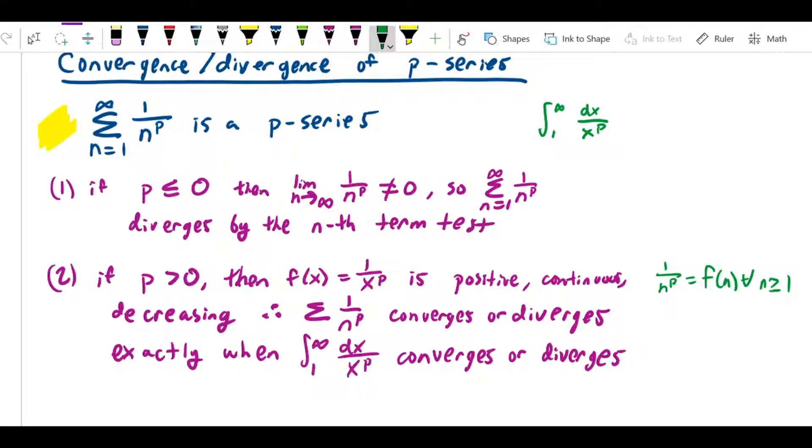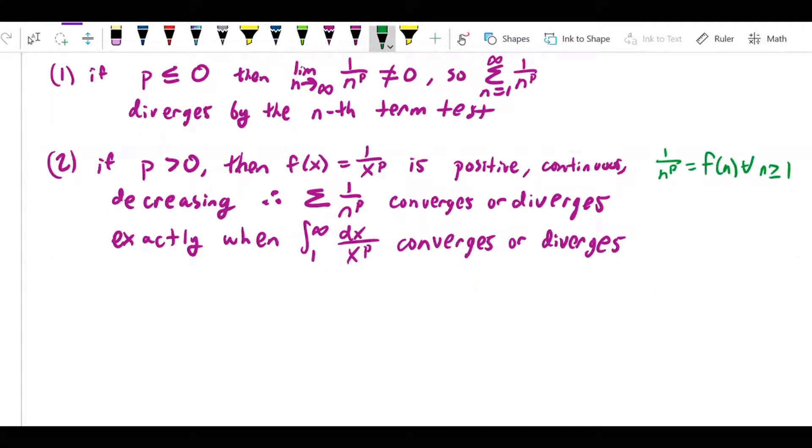I think it's fairly obvious that, just looking at 1 over x to the p, that as long as x is a positive number, this is going to be positive. Based on the rules of continuity, it's certainly continuous. To show that it's decreasing, I can simply take the derivative. If I define f of x to be 1 over x to the p, which is x to the negative p, then f prime of x is negative p x to the negative p minus 1. That's going to equal negative p times something positive. And since we've assumed in case 2 that p itself is positive, that means negative p is negative, so this is going to be less than 0. That shows, since the derivative is less than 0, that the function is decreasing.